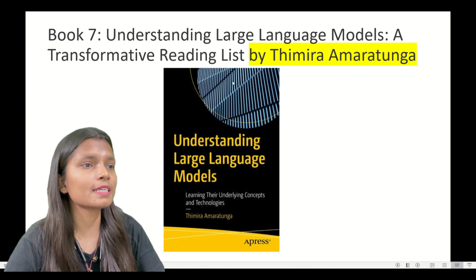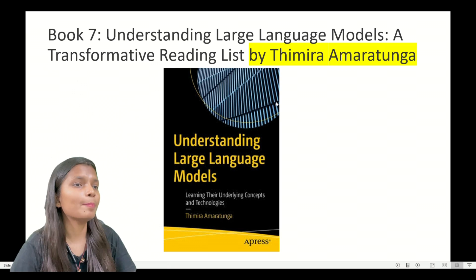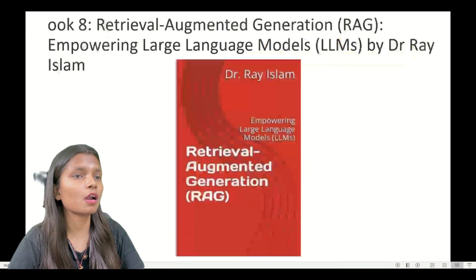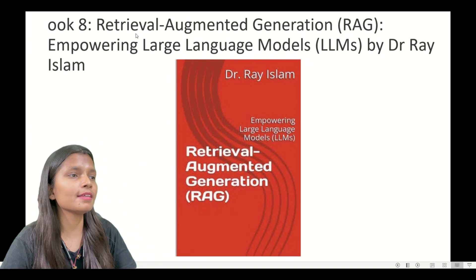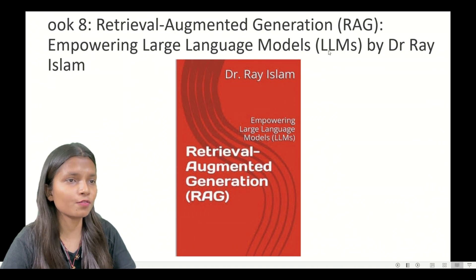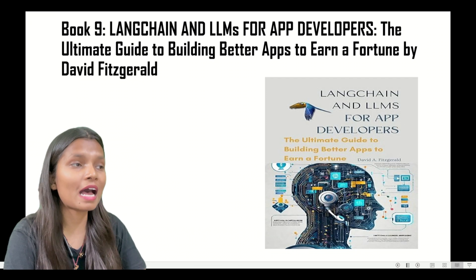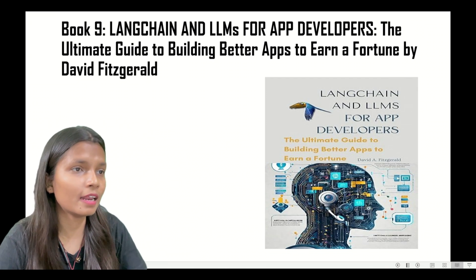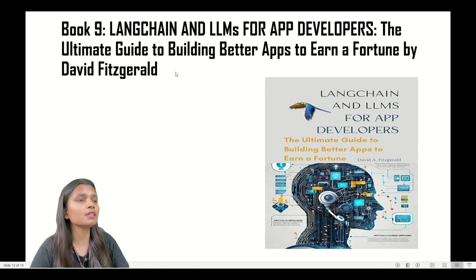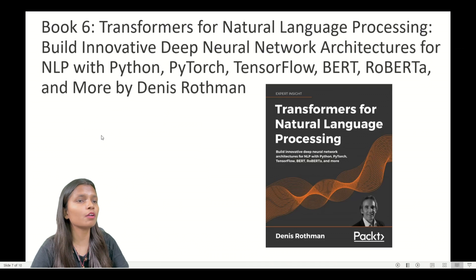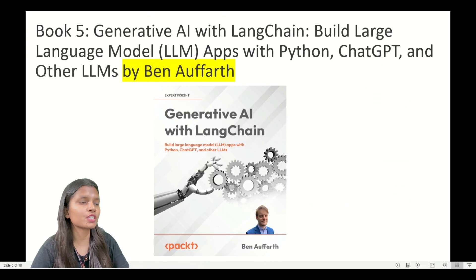Book number seven is 'Understanding Large Language Models: A Transformative Reading List' by Thimira Amaratunga. Book number eight is 'Retrieval-Augmented Generation: Powering LLMs' by Dr. Ray Islam. Last but not least, book number nine is 'LangChain and LLMs for App Developers: The Ultimate Guide to Build Better Apps to Earn a Fortune' by David Fitzgerald.